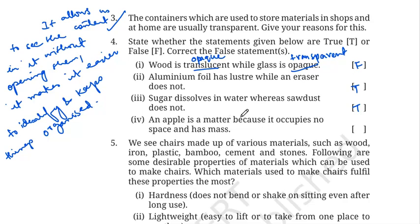Fourth statement: an apple is matter because it occupies no space and has mass. Apple is matter — that part is true — but it does occupy space and has mass. So the statement is false.